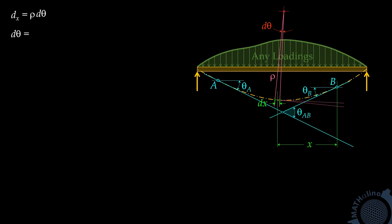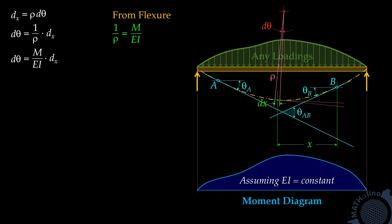Now, dtheta is equal to 1 over rho times dx. From flexure, 1 over rho is equal to M over EI. Substituting M over EI for 1 over rho, our equation now involves the moment M of the beam. So let us draw the moment diagram. We can write our equation as dtheta equals M over EI times dx.